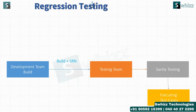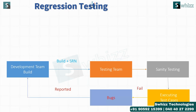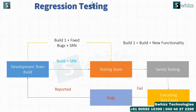What happens here is that a large number of test cases need to be executed per build iteration. For a single build iteration, you can consider at least 100 to 200 test cases to execute.